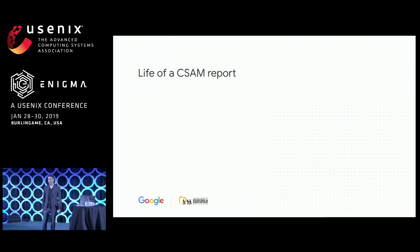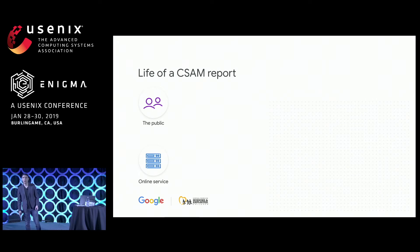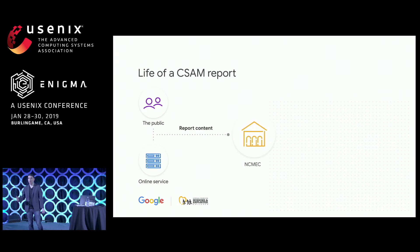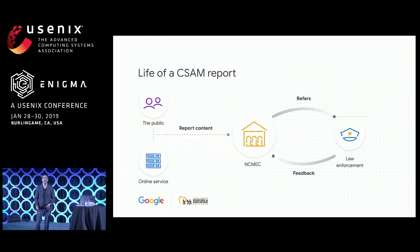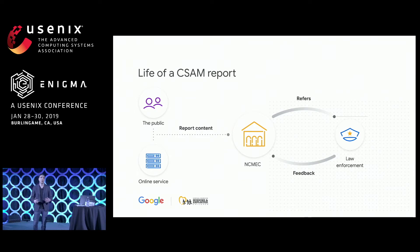So how does that work? Well, somewhere on the internet, the public or online services will find a piece of content they believe is sexual abuse material involving children, and they will report that content to NCMEC. NCMEC analysts will then review the content, determine its origin, and refer it to the most competent law enforcement agency in the hope that they can find the predator, rescue the child, and close the case. Law enforcement will often then provide feedback to NCMEC, which combines statistics about the whole ecosystem.